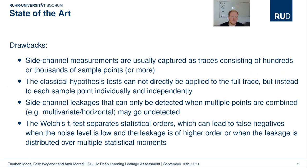This method has been applied for many years in the community, and different extensions to the tests and the methodology exist to tackle specific problems. But there are still a number of aspects where the technique works less than ideal. First of all, side-channel measurements usually consist of hundreds or thousands of sample points or even more, but the classical tests are normally applied to each sample point individually instead of on the full trace at once. Therefore, side-channel leakages that are spread over multiple points, for example multivariate or horizontal leakages, may go undetected.